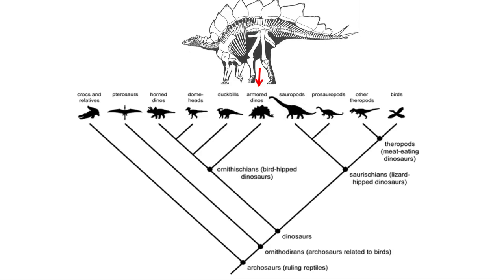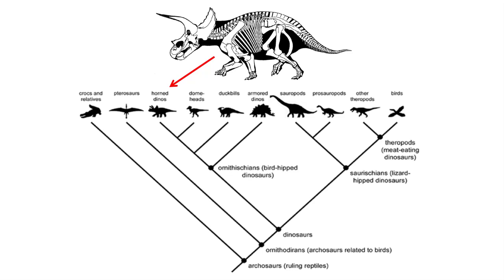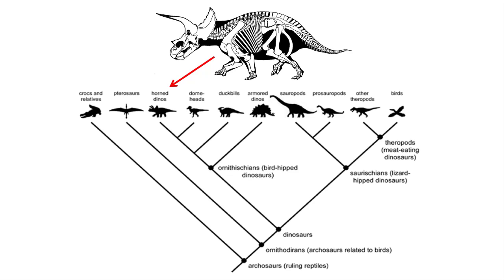The Ornithischia include the armored dinosaurs like Stegosaurus and Ankylosaurus, the hadrosaurs or duck-billed dinosaurs, the dome-headed pachycephalosaurs, and the horned ceratopsian dinosaurs like Triceratops. Both groups of dinosaurs arose during the late Triassic, with the Ornithischia becoming completely extinct by the end of the Cretaceous, and the Saurischia only represented today by the modern group that arose from them — the birds.